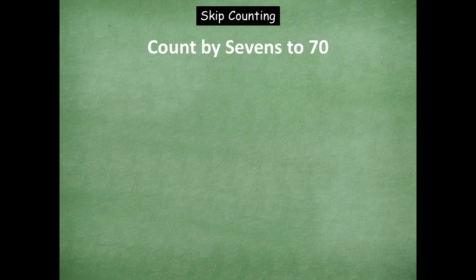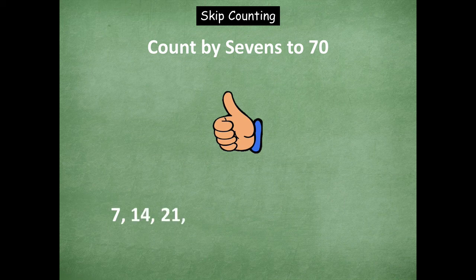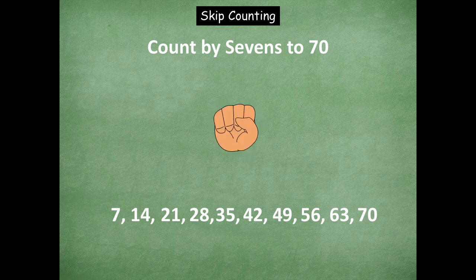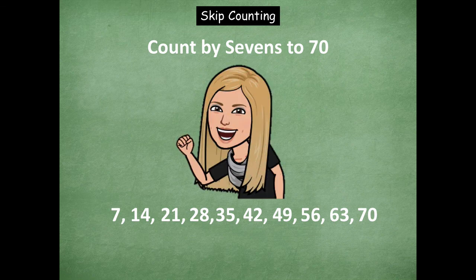Let's skip count by sevens to seventy. We're gonna start with counting up. Seven, fourteen, twenty-one, twenty-eight, thirty-five, forty-two, forty-nine, fifty-six, sixty-three, seventy. Counting down. Sixty-three, fifty-six, forty-nine, forty-two, thirty-five. Counting up. Forty-two, forty-nine, fifty-six, sixty-three, seventy. Rock on friends with counting by sevens to seventy.